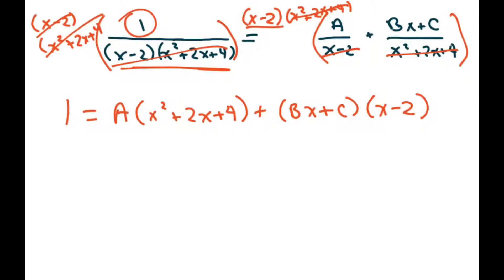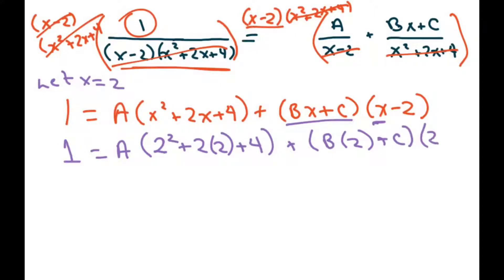Now we want to solve this as best we can, so I think what I'm going to do is go ahead and let x equal 2 first, because if you let x be 2, this will eliminate this part, and we can find A, so we have 1 equals A, so we let x be 2 times 2 squared plus 2 times 2 plus 4, and then we're going to have here plus B times 2 plus C, then you're going to have your 2 minus 2.